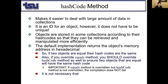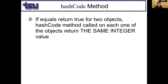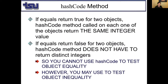If equals returns true for two objects, hashCode called on each should return the same integer. If equals returns false, hashCode does not have to return different integers. So you cannot use hashCode to test equality, but you may use it to test inequality. By default, if two objects point to the same memory, their hash codes are the same.